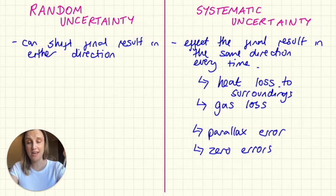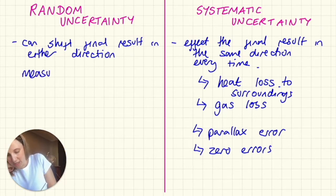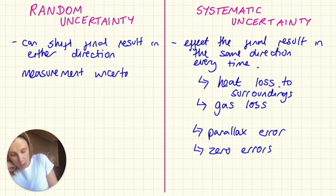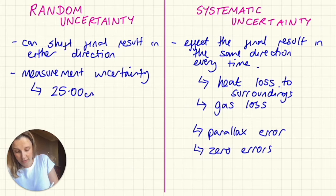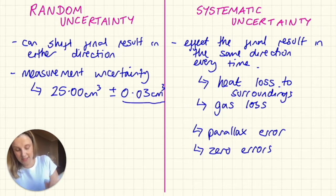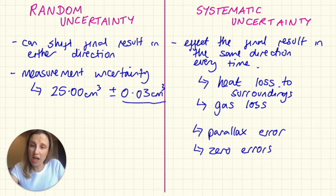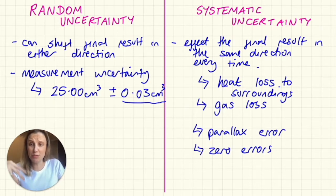So predominantly when we're talking about random uncertainty, we're talking about measurement uncertainty that's caused by equipment. So hopefully you've seen on pieces of equipment, it might say on a pipette that it measures 25.00 cm cubed plus or minus 0.03 cm cubed. This is its absolute uncertainty.